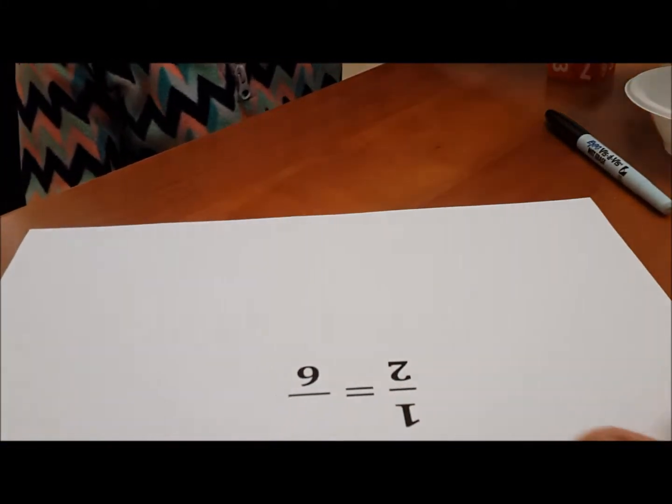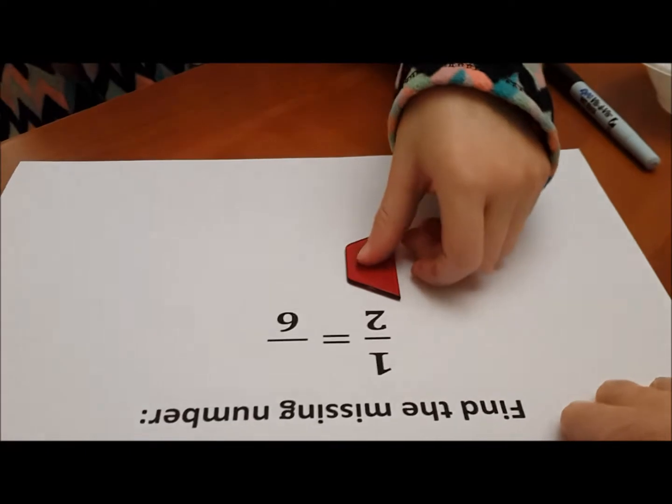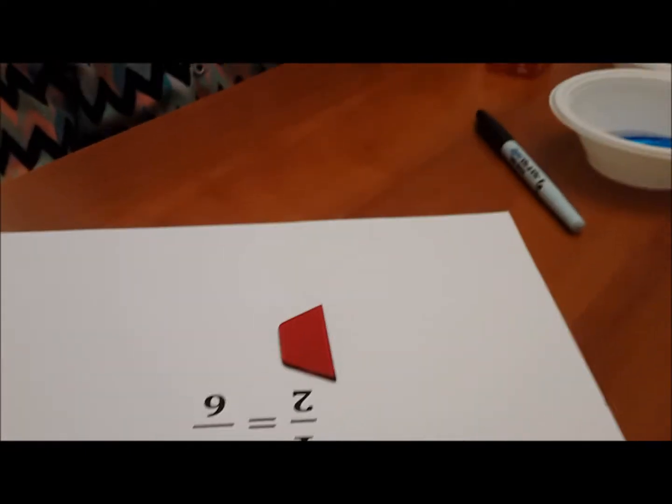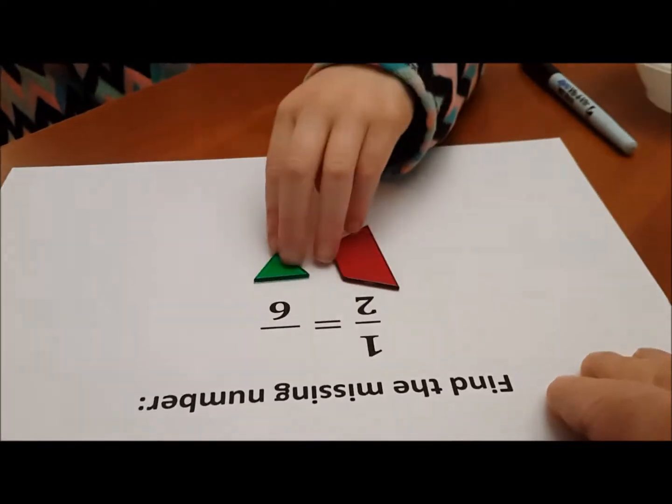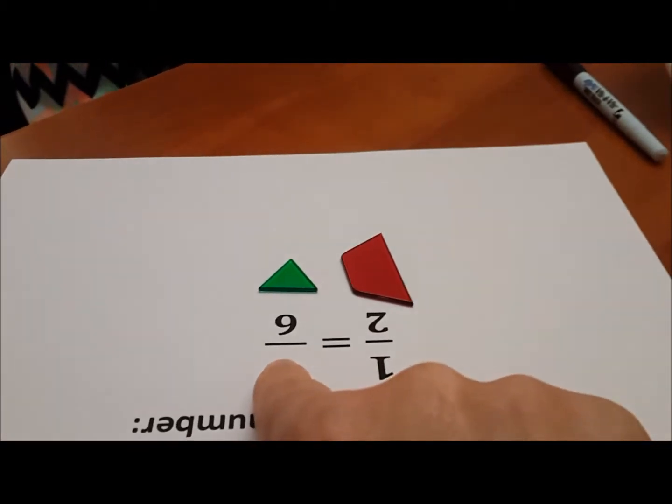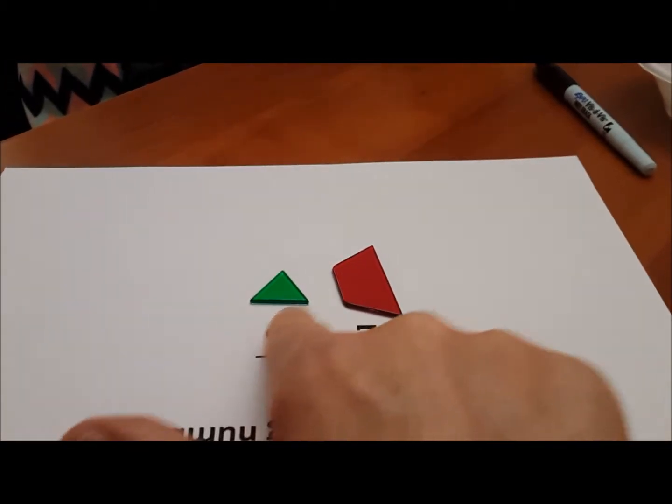Which block is one half? Okay. And which block is the sixth block? Okay. So we want to know one half is equal to how many sixths. How many of the green blocks do you need to equal the red block?